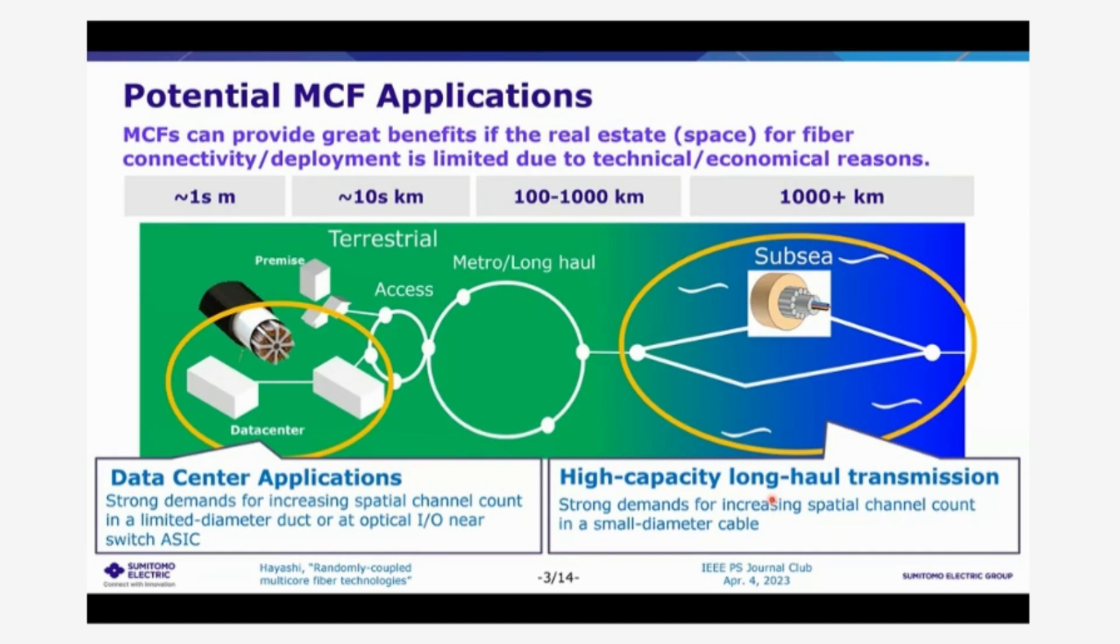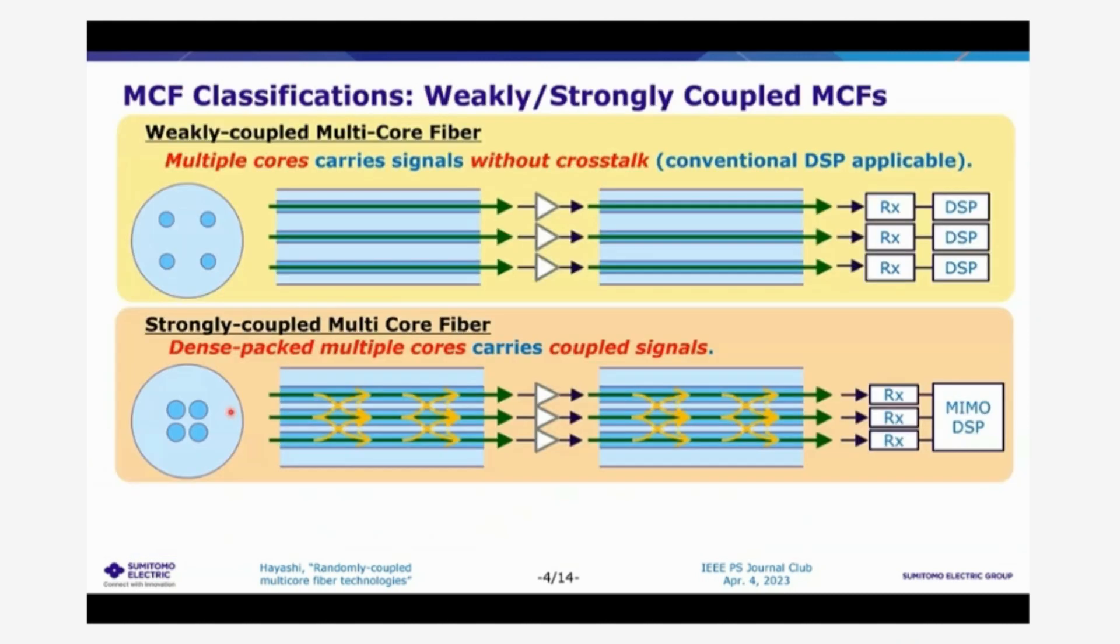So multicore fiber can provide great benefit if the real estate, that is space, is limited due to technical or economical reasons. So one of the strong potential applications is submarine long-haul transmission systems. And the other is data center application with very high density and high fiber count.